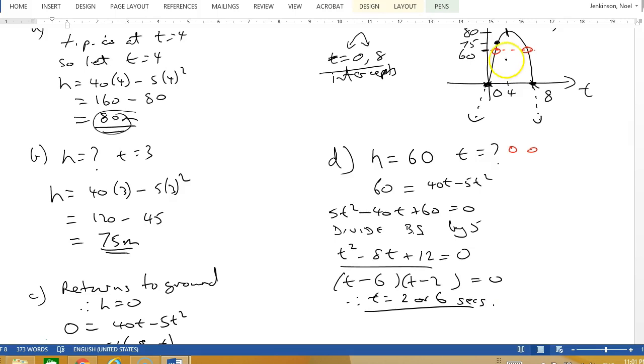The height equals 60 at 2 seconds and at 6 seconds. Does that make sense? It's symmetrical. Seems to work.